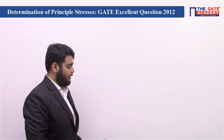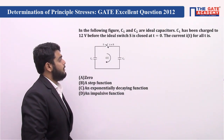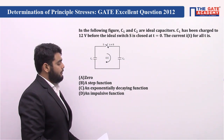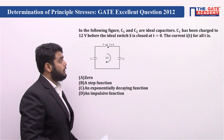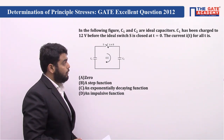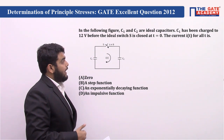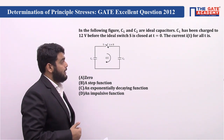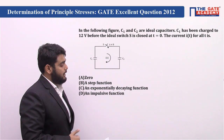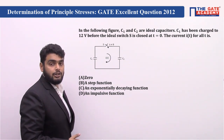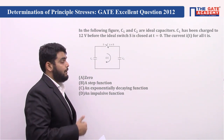The question you can see on the board: In the following figure, capacitors C1 and C2 are ideal and C1 has been charged to 12V before the ideal switch S is closed at t equal to 0. The current i(t) for all t is — option A: 0, option B: a step function, option C: an exponentially decaying function, and option D: an impulse function.